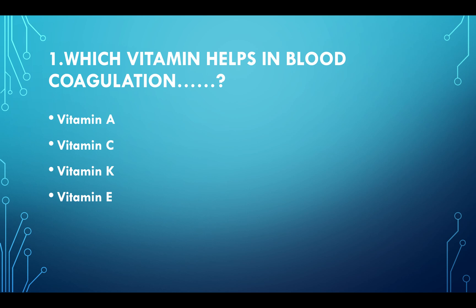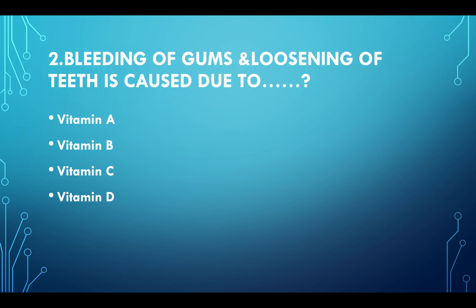Which vitamin helps in blood coagulation? Option A: Vitamin A. Option B: Vitamin C. Option C: Vitamin K. Option D: Vitamin E. Answer: Option C, Vitamin K.